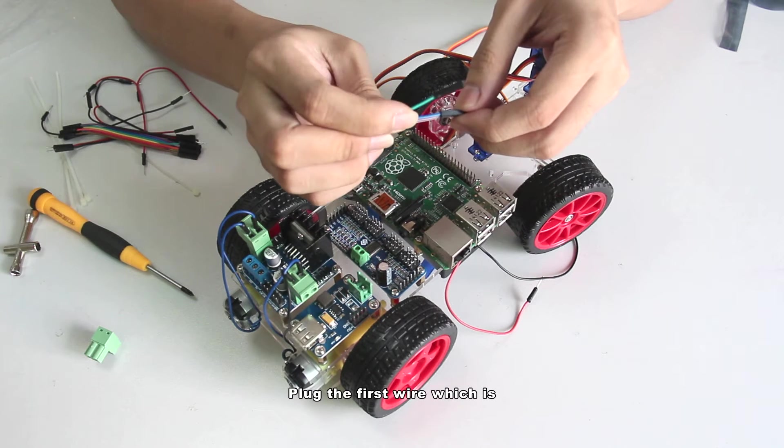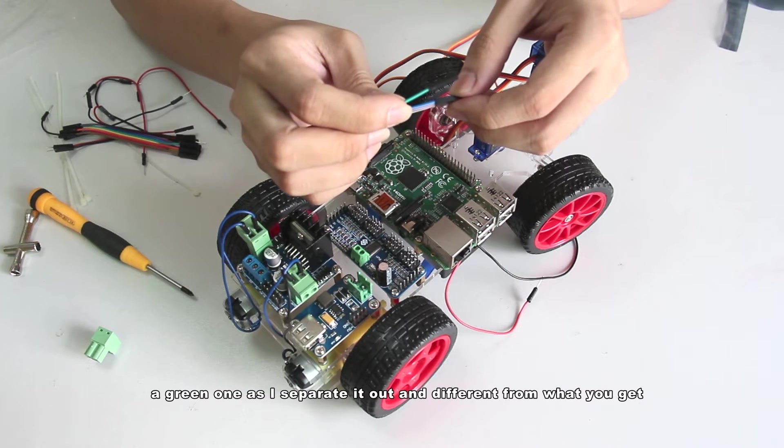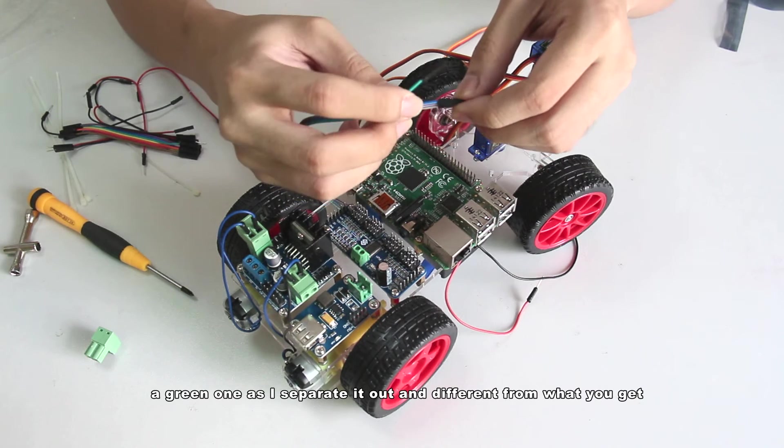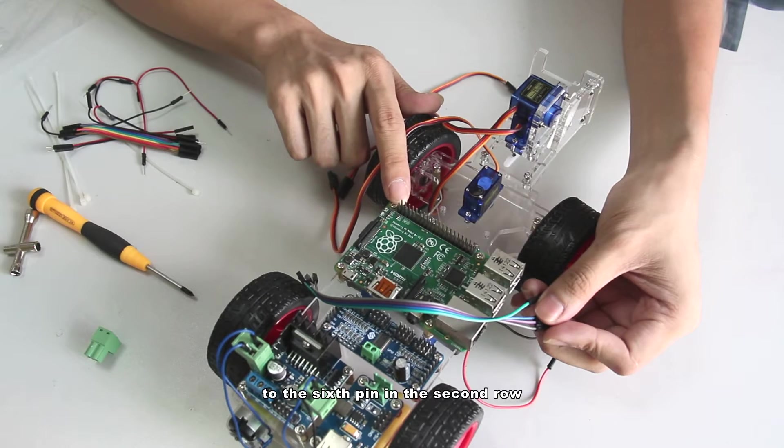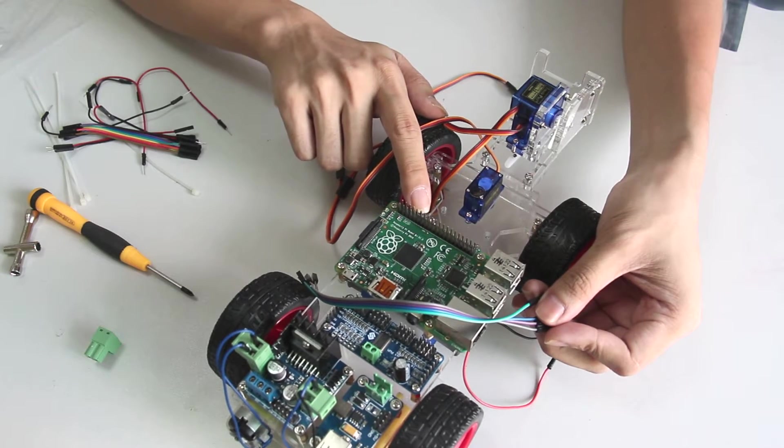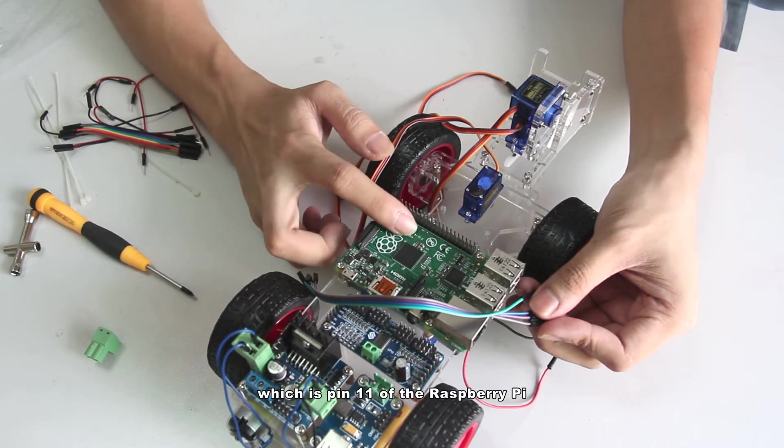Plug the first wire which is a green one as I separated out and may be different from what you get. The second wire to the 6th pin in the 2nd row which is pin 11 of the Raspberry Pi.